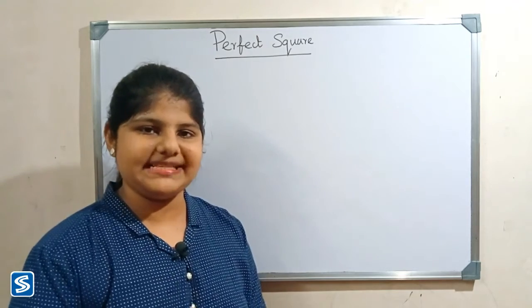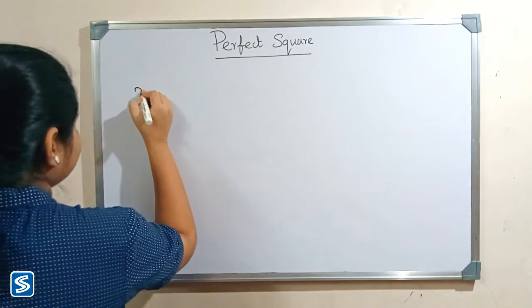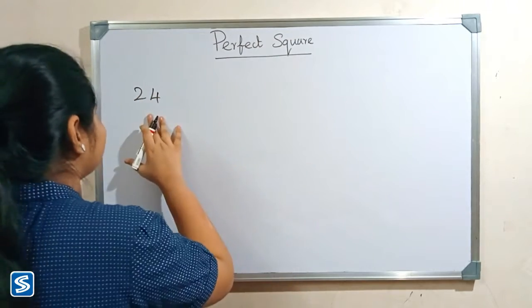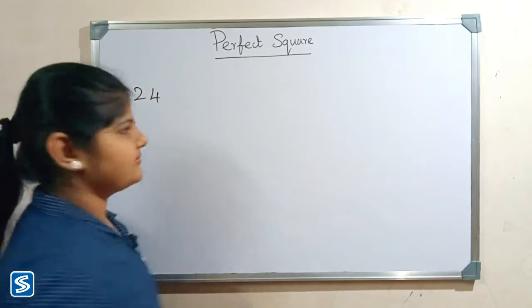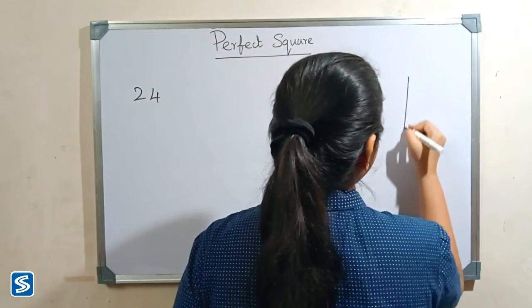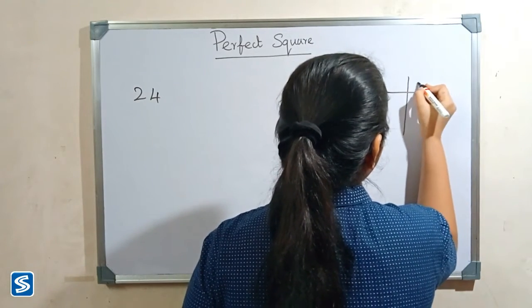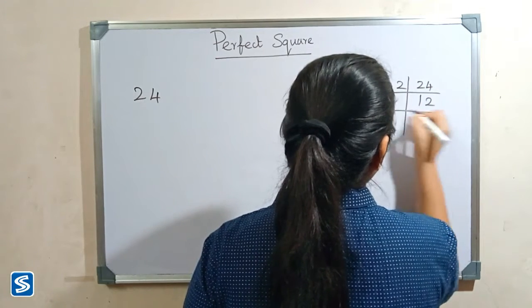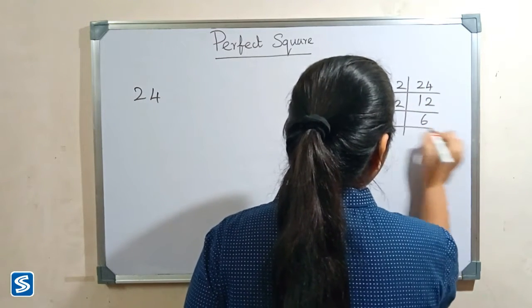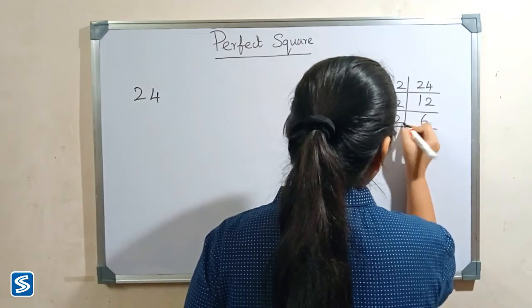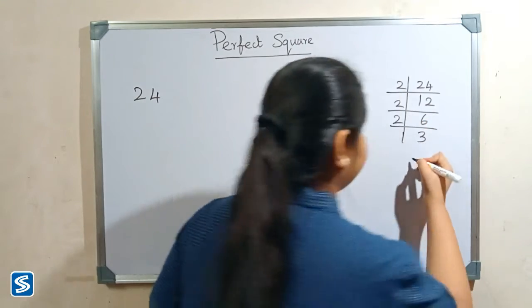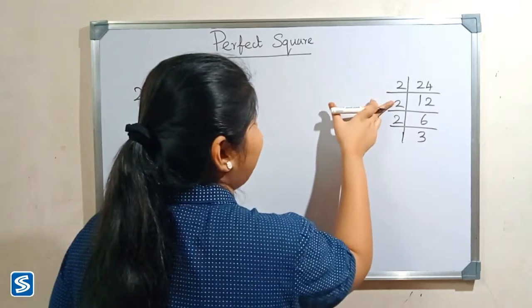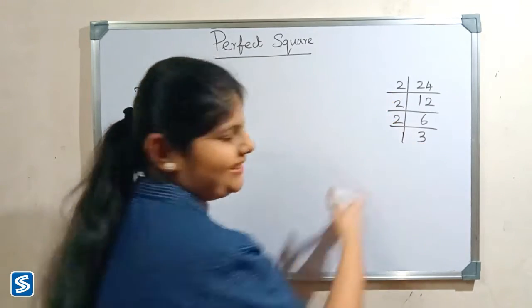Now we will take one more example: 24. We have to find the factors of 24. The factors are 2 × 2 × 2 × 3.